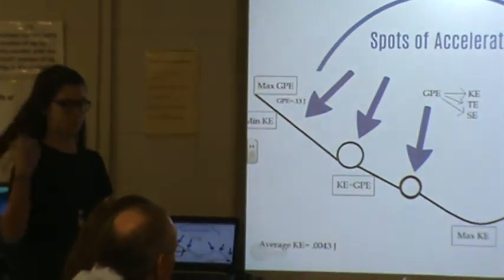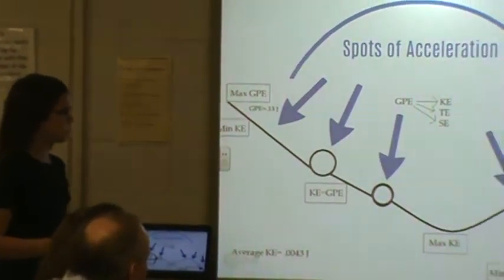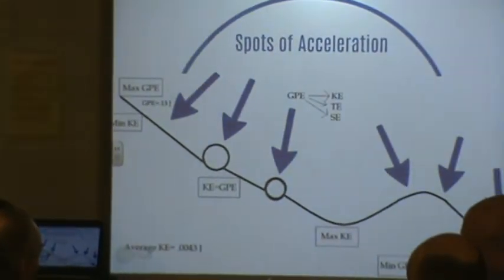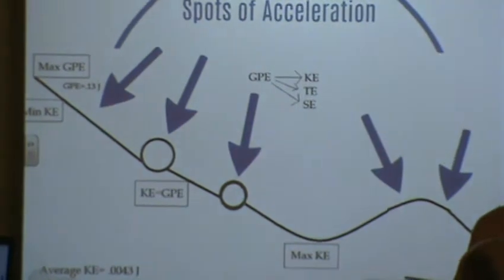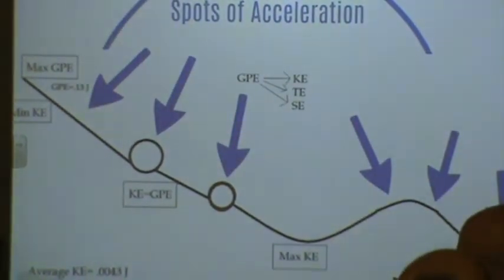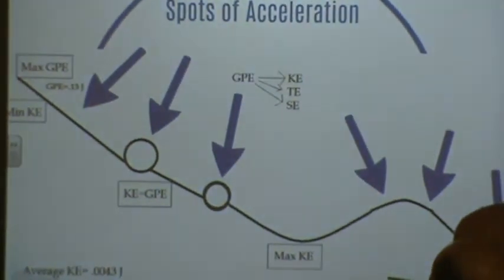As stated previously, acceleration is a change in direction, or a change in velocity. So here are a few key points, or points of interest, on our diagram. As you can see, near the top of the hill, as it's coming down, it is positive acceleration because the velocity is increasing.